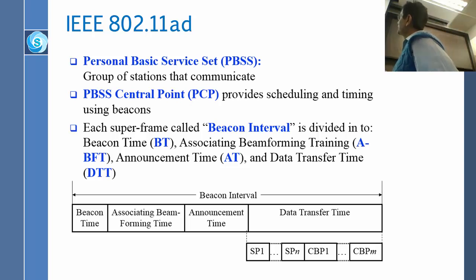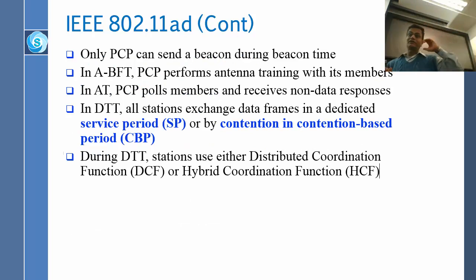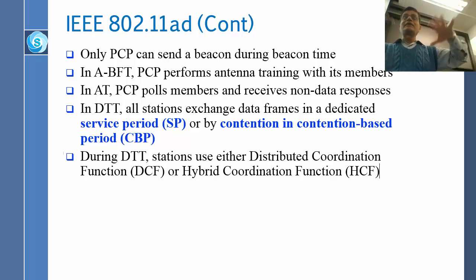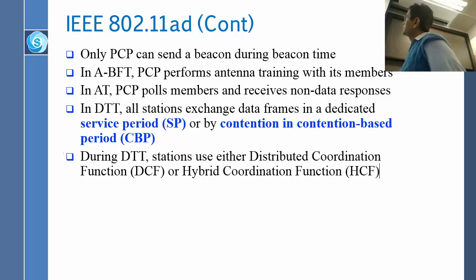More details are coming up about each of these periods. Only the PCP can send a beacon during the beacon time, so you cannot have multiple beacons — otherwise they would be confusing. You can have multiple networks in the same area and they will have their own beacons. During the associative beam forming time, the PCP performs antenna training with its members.